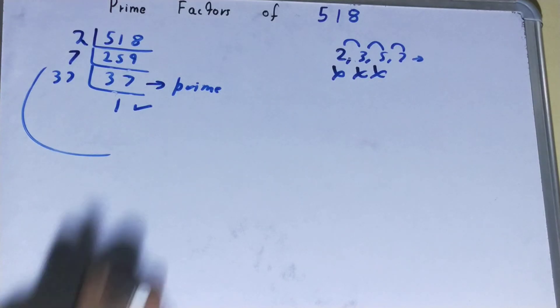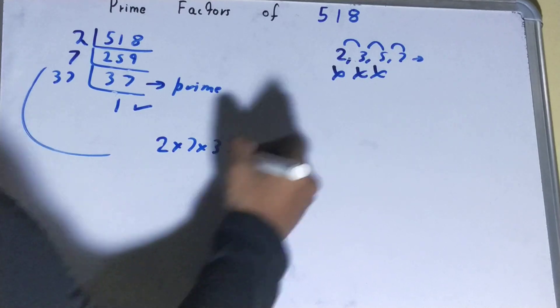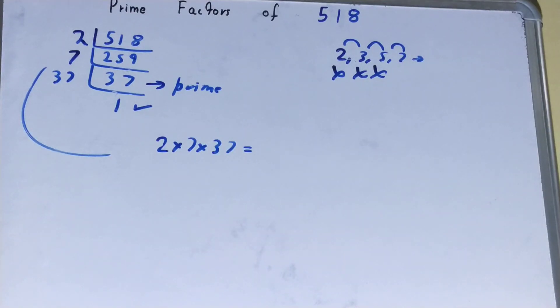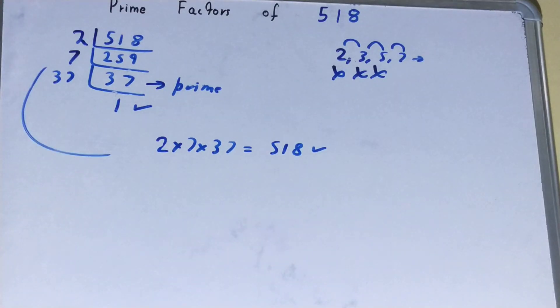That is 2 × 7 × 37. Now, if you want to confirm whether it is right or not, you can multiply them, and if on multiplying you have the number back again, that means your calculation is correct. If not, you need to recheck.